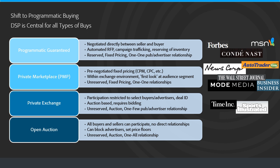A private marketplace is where there is pre-negotiated fixed pricing — it could be CPM or CPC. It's within an exchange environment, and basically an advertiser gets a first look at an audience at a fixed price. It's not guaranteed — the inventory and the number of impressions aren't guaranteed, but the pricing is fixed. It's typically a one-to-one relationship between a publisher and an advertiser or an ad network and a publisher. Examples include News Corp's ad exchange, Autotrader, Mode Media (formerly Glam Media), and Business Insider, all publishers that have private marketplaces or are considering them.